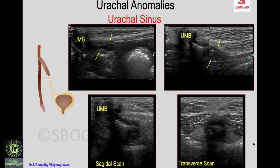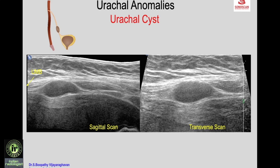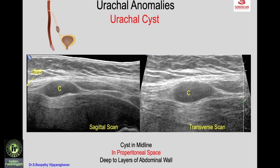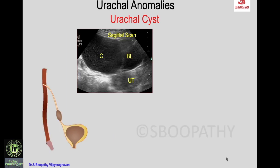A urachal cyst can occur anywhere along the tract. On longitudinal scan, an oval cyst is seen in the preperitoneal space between the umbilicus and the bladder, confirmed on transverse scan — a urachal cyst along the midline in the preperitoneal space, deep to the layers of the abdominal wall.